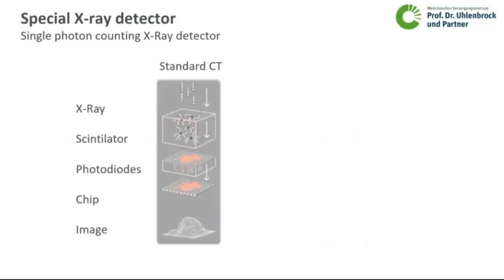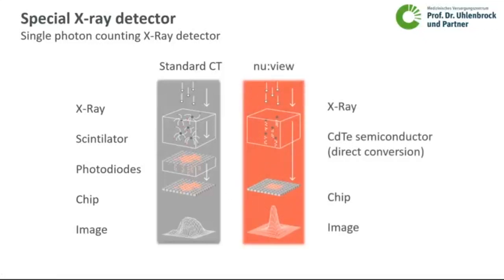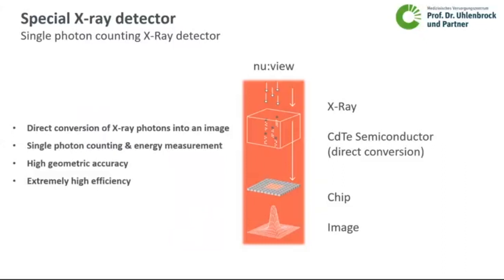If you compare the photon counting detector with a standard CT: with a standard CT, the x-ray goes into a scintillator, which emits light that is measured by photodiodes and transferred to a chip, producing a good quality image. But with the modern photon counting semiconductor system of direct conversion, you have direct conversion of the x-ray into electric counts — the chip directly produces an image. Therefore, you have a single photon counting and energy measurement system with extremely high geometric accuracy and efficiency.